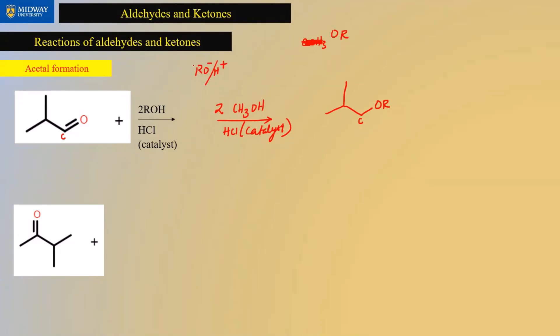The H plus, if it's a spectator, then the RO minus is what the nucleophile is. This is a spectator. This is the key component. So basically, the OR gets added twice to the carbon replacing the double bond O.